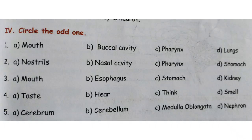Number 5: A: cerebrum, B: cerebellum, C: medulla oblongata, D: nephron. A, B, and C — cerebrum, cerebellum, medulla oblongata — are parts of the brain. Nephron is part of the kidney. So the answer is D: nephron. Please check your answers.